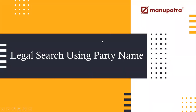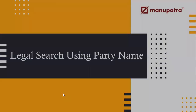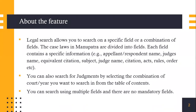Legal search using party name. Legal search allows you to search on a specific field or a combination of fields which the case laws on Manapacha have been divided into. These can be specific information like the applicant's or respondent's name, the judge's name, the citation, or the subject — the acts, rules, or orders that have been used in the judgment.